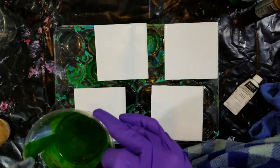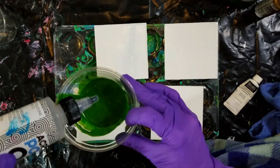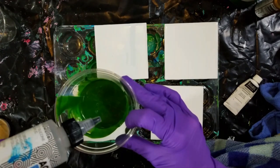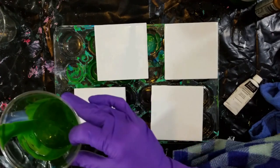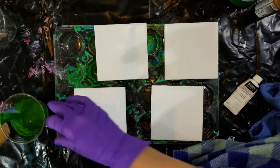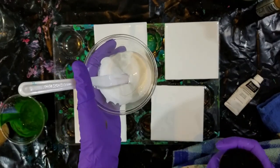I'm also using some acrylic pour oil that I bought from Amazon. Again, everything will be linked in the description below. I'm only putting a few drops of that into my dark green.